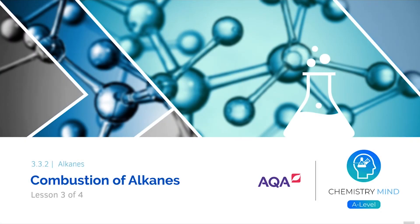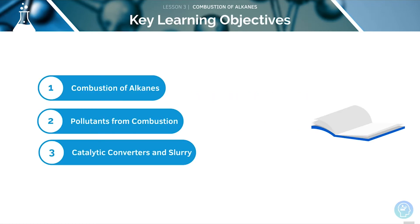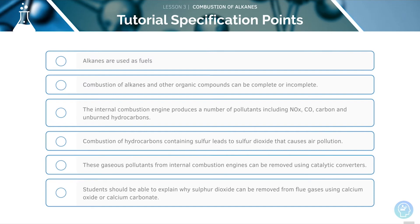Welcome to lesson three of four in this tutorial, covering the combustion of alkanes. This is the third video in our series of four lessons on the topic of alkanes. Here are the key learning objectives for this tutorial: first, we'll look at the combustion of alkanes, then at the pollutants from combustion, and finally at catalytic converters and slurry. Here are the AQA specification points we'll be covering in today's lesson. Feel free to pause the video now and have a quick read through them before we begin.